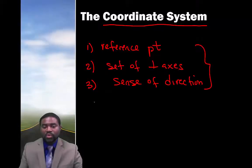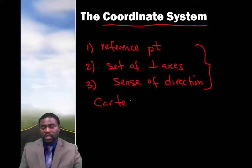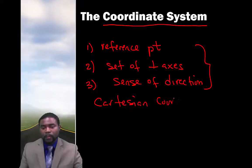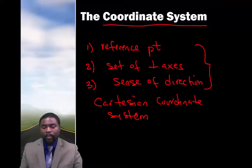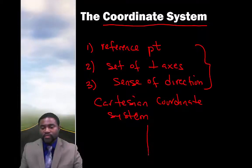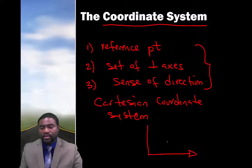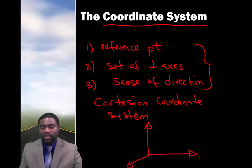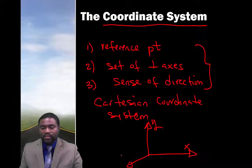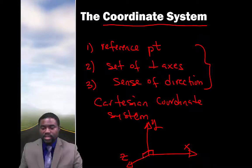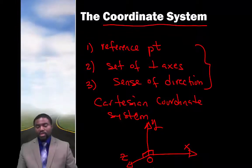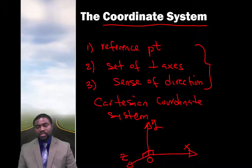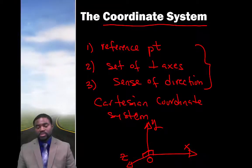In this course, we will use what we call the Cartesian coordinate system, in which we have the y, the x, and the z axes. These three axes are essentially at right angles to each other, and this is our origin. For this topic today, we are going to limit ourselves to one-dimensional motion.